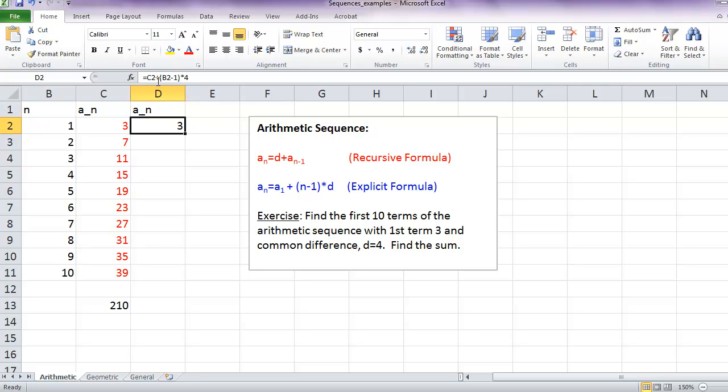Notice that in this first cell, that C2, or A1 value, is not supposed to change. I'm always using that. And so I'm going to put dollar signs around it so that it doesn't change. Let's fill down.